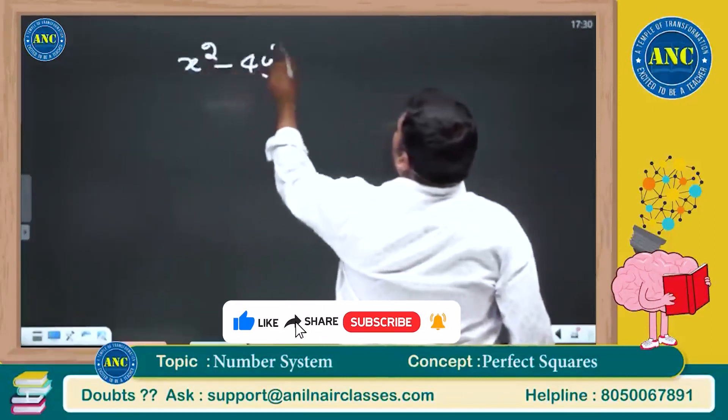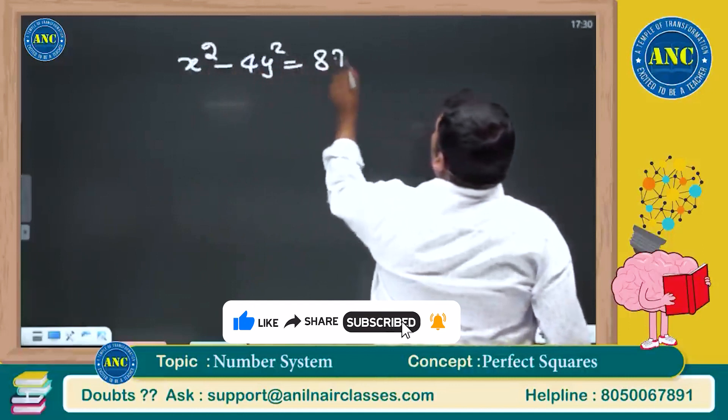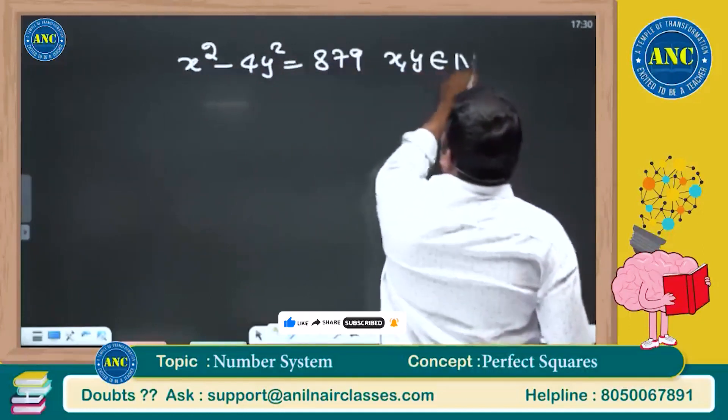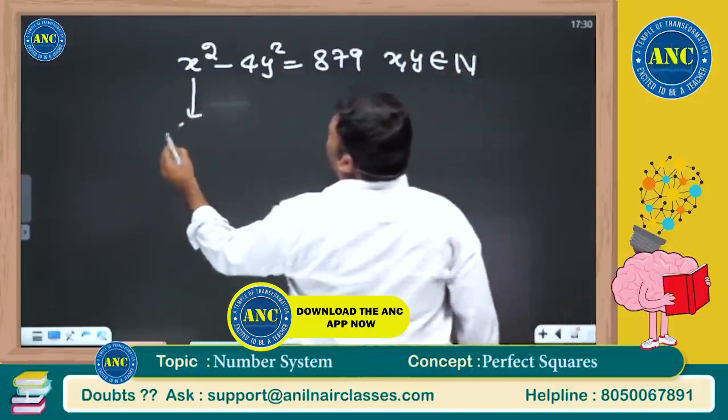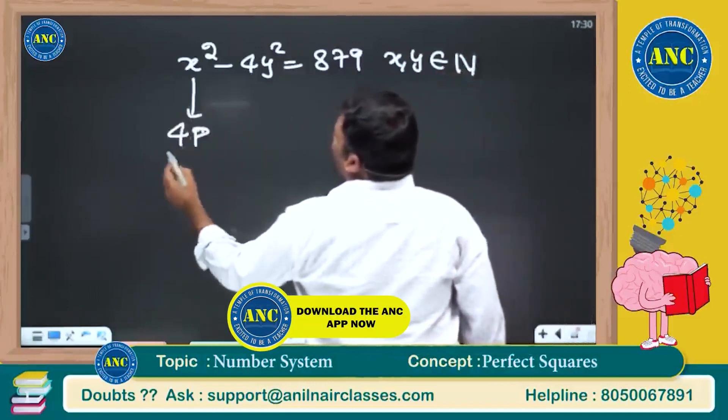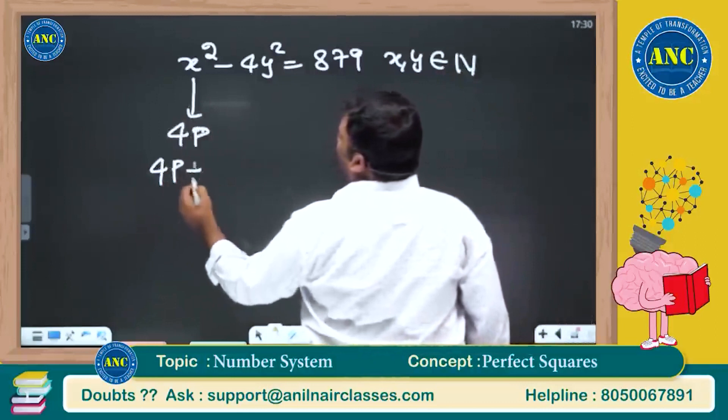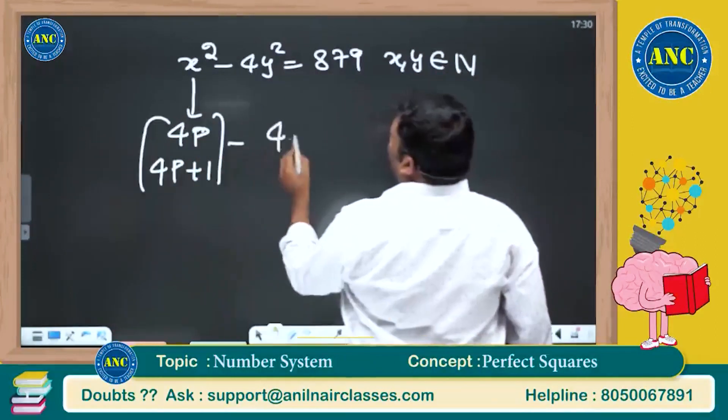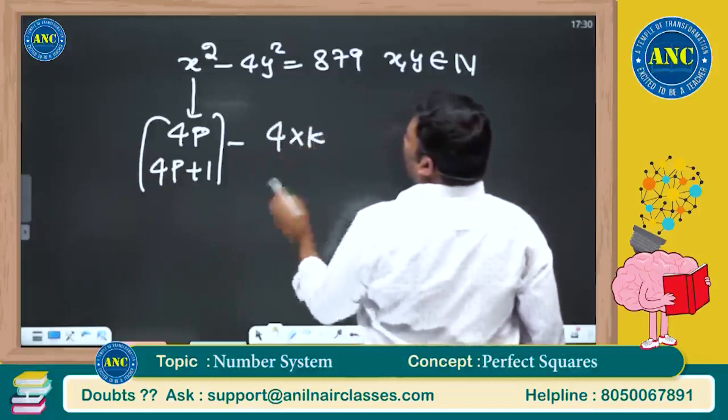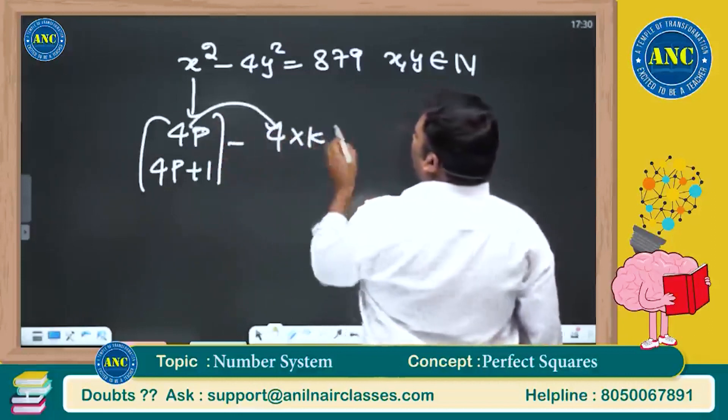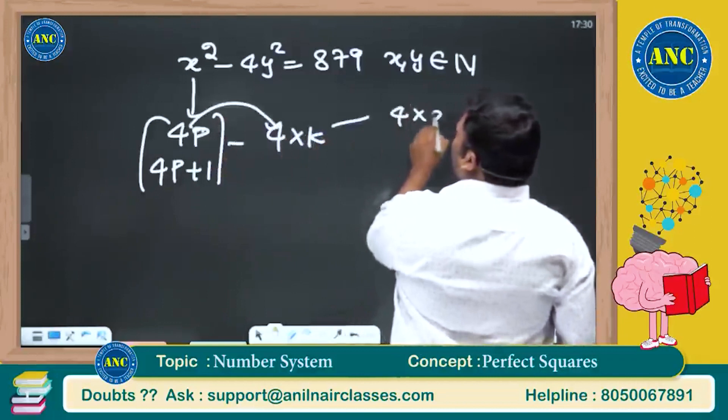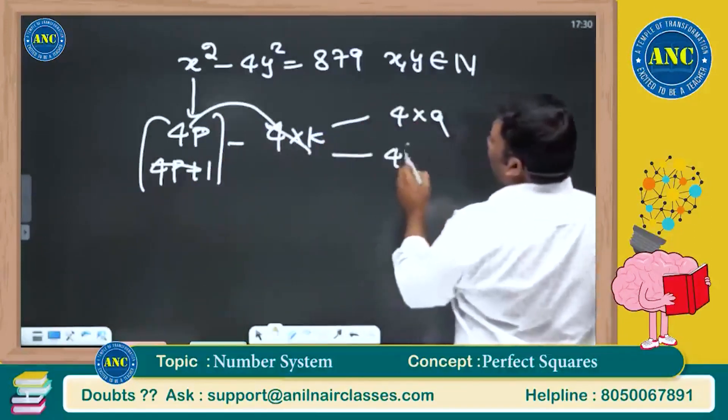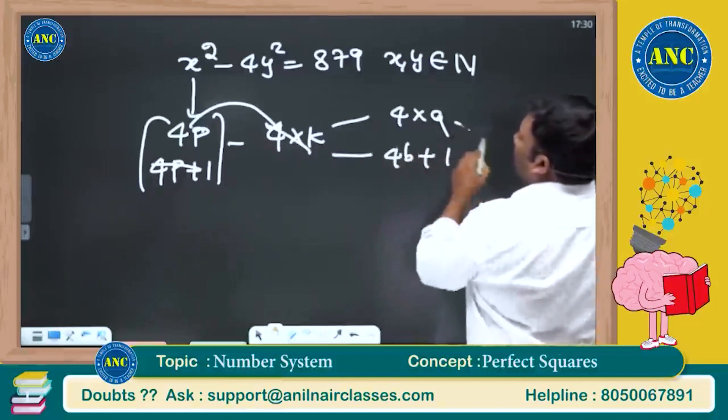x square minus 4y square. In case if you are an Anil Nair student, immediately within 5 seconds you can solve the logic. x square is a perfect square, it is either 4p or 4p plus 1. Are you all with me? Minus 4 into any number, it is 4 into k. Both are divisible by 4. Answer should be divisible by 4, or 4k divisible, answer should be divisible by 4 and gives a remainder 1.